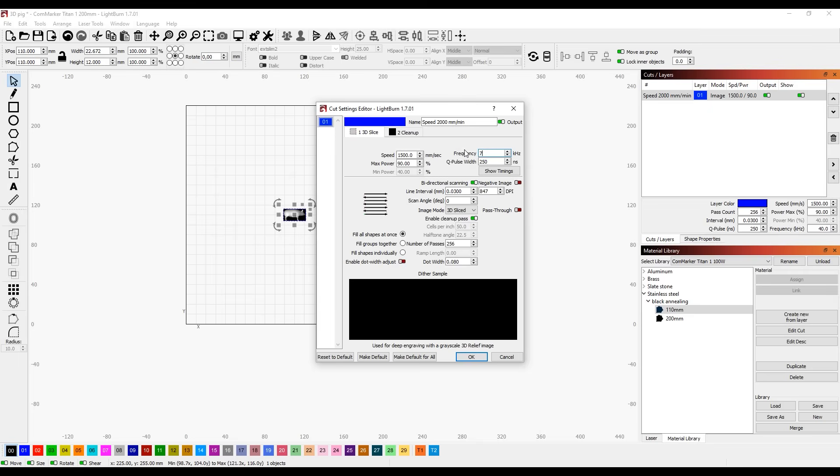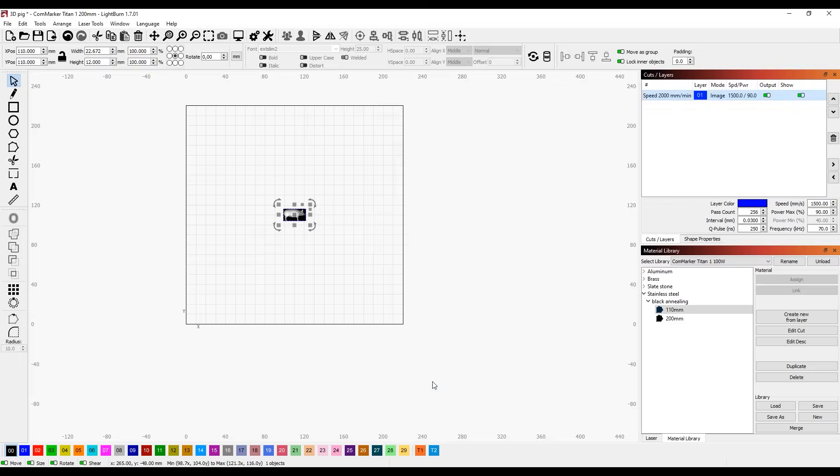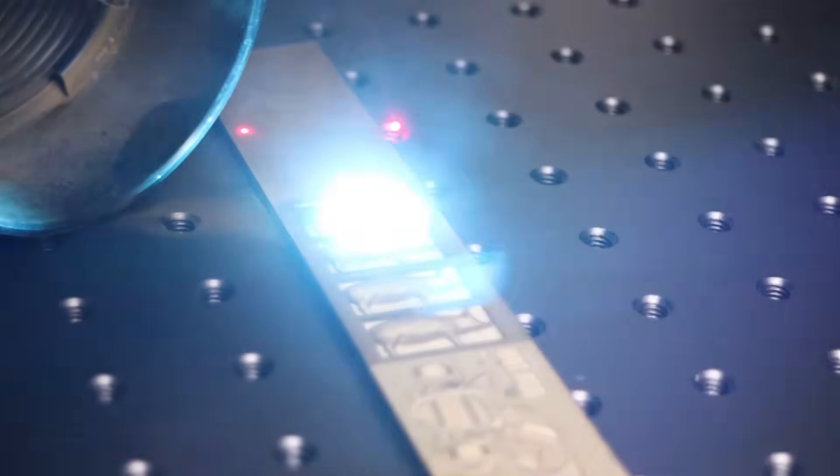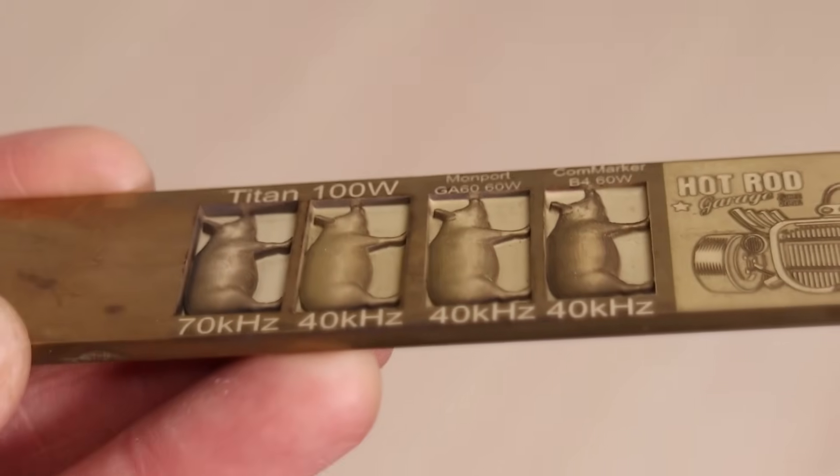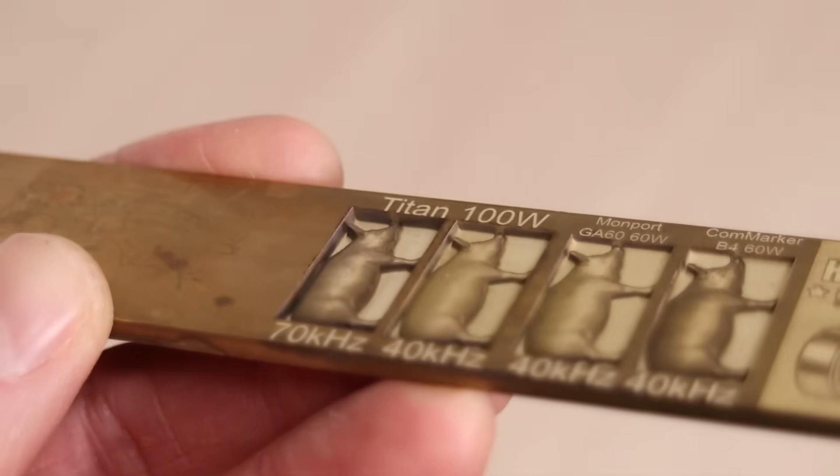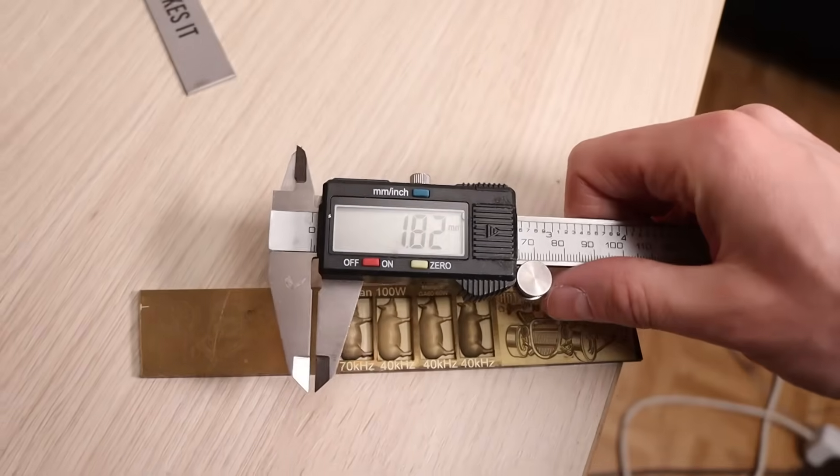When I increased the engraving frequency to 70 kHz and ran the test again, the machine was able to output its full power, resulting in a significantly improved engraving. The end result was half a millimeter deeper, measuring 1.8 millimeters deep.